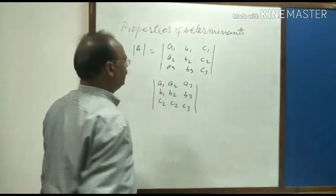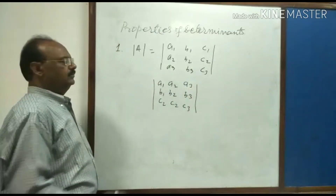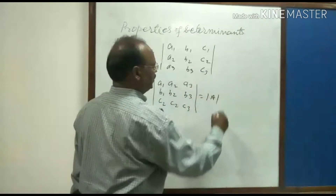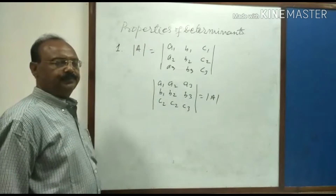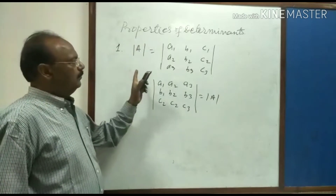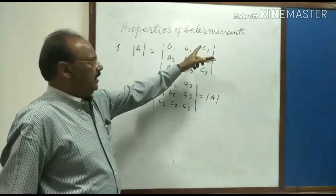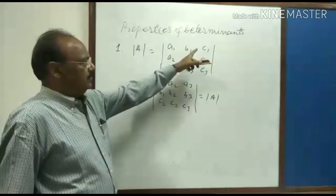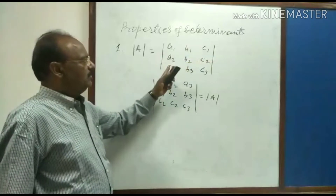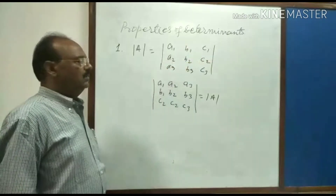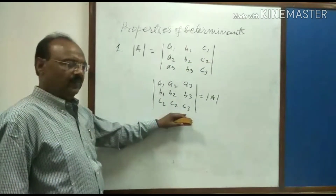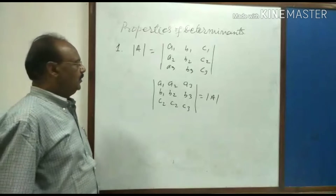Then there is no change in the value of the determinant. This is the first property: when corresponding elements of rows are interchanged with corresponding elements of a column, there will be no change in the value of the determinant.